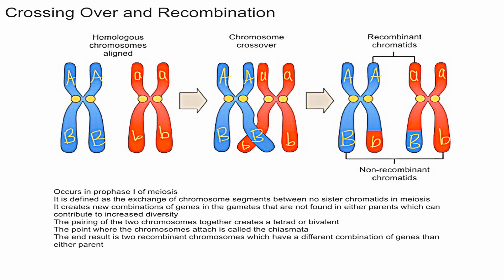I'm not going to get into the exact mechanism of how you break apart the chromosomes and exchange the nucleic acids and genetic material, because that's a bit more complex. But essentially what's happening is that these parts exchange — this blue chromosome gets a piece of the red, and the red gets a piece of the blue.